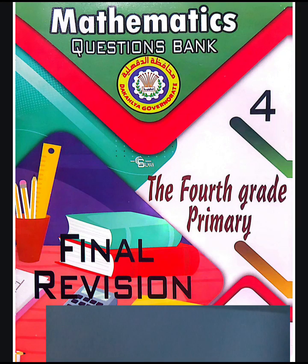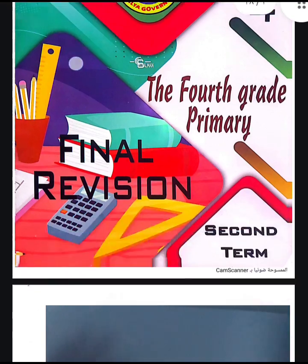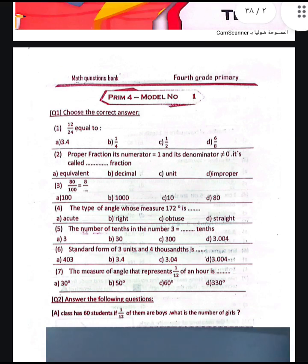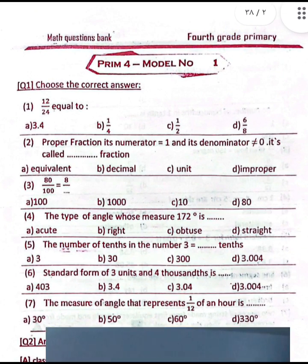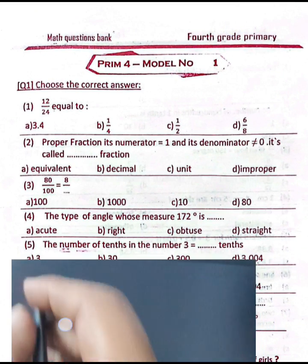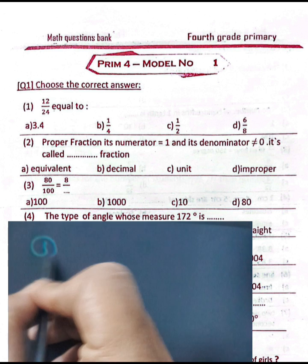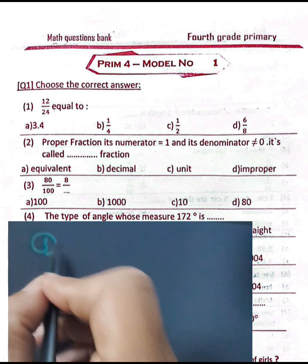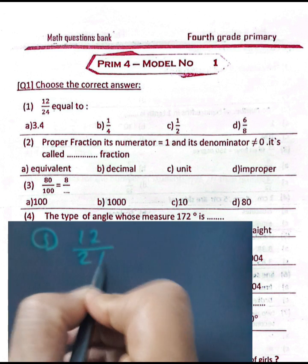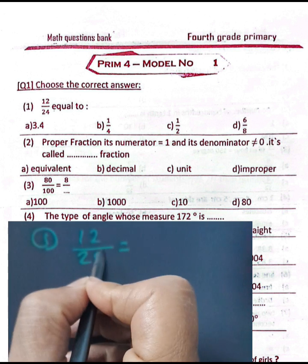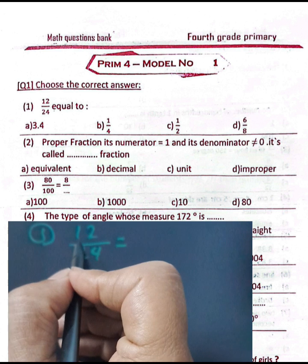Today we will solve a mathematics questions bank from the cardia government. Question number one shows the correct answer: 12 over 24 is equivalent to what? It's equivalent to half.